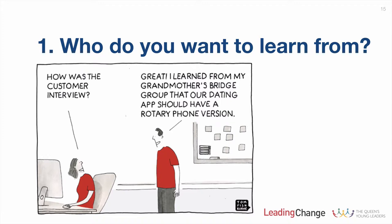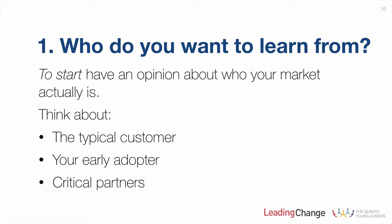The book is full of cartoons, and this one is all about finding the right customer — those right people who can actually give us the answers we need to know. When considering who we want to learn from, we need to have an opinion about who our market actually is. Who's the typical customer going to be? Who is the earliest adopter — that one person who feels the pain or need for this product most keenly and likes to use things first? And who are the critical partners going to be? Not customers, but are there other organizations — key partners from your business model canvas — that you need on board for this venture to work?